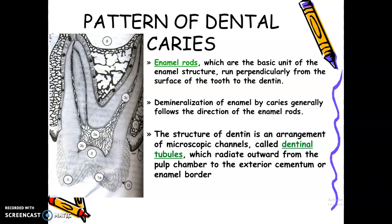Before we do that, remember the enamel rods and the dentinal tubules in your oral histology? The enamel rods, which are the basic unit of the enamel structure, run perpendicularly from the surface of the tooth to the dentine. When we do our tooth preparation in operative dentistry, we always follow the direction of the enamel rods and dentinal tubules. Demineralization of enamel by caries generally follows the direction of the enamel rods.